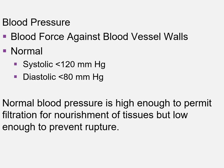When we measure blood pressure, we're measuring the force of the blood against the blood vessel walls. Normal blood pressure would be a systolic of less than 120 but greater than 90, and a diastolic of less than 80 but greater than 60. Normal blood pressure is high enough to allow for filtration and nourishment of the tissues, but low enough to prevent rupture of the vessels.